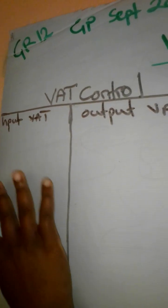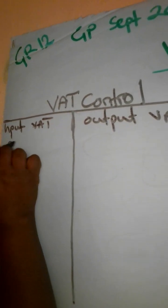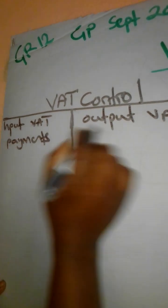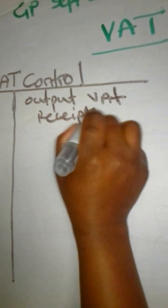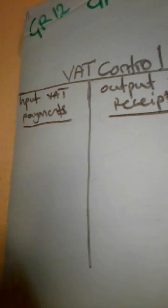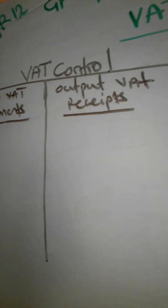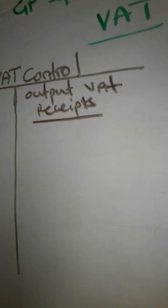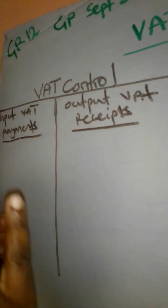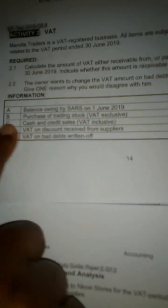Input VAT is VAT on payments, so we are looking at the payments. Output VAT is VAT on sales — the money that has been received, in other words receipts. So as we look at the transactions given, we simply have to identify whether money is being paid or money is being received, so that we know on which side we are supposed to record.